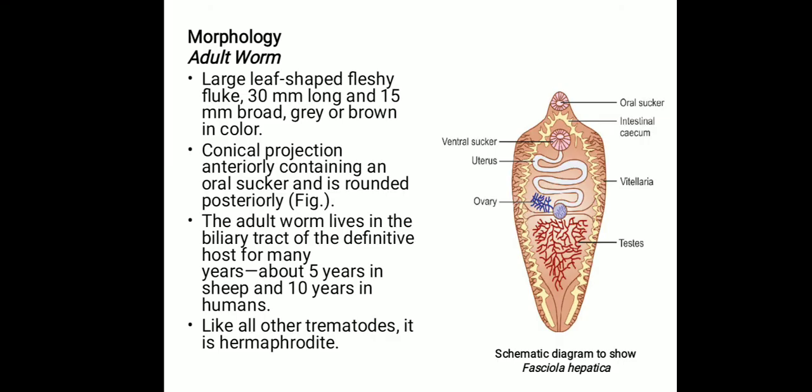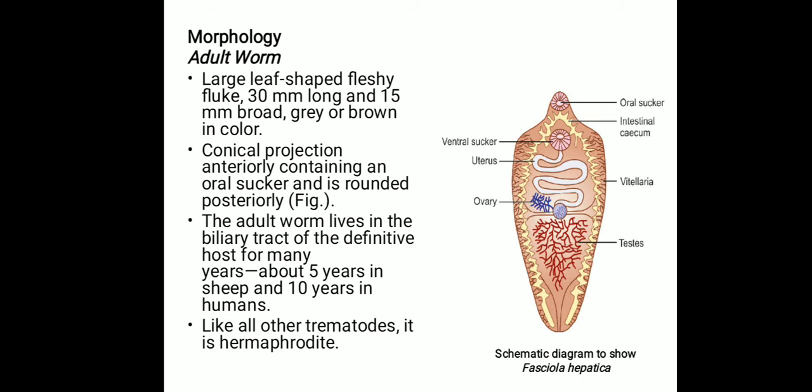The egg is the other morphological form. The eggs are large, oval, operculated, stained, and about 140 micrometers by 80 micrometers in size. They contain an immature larva known as the miracidium. These eggs do not float in a saturated salt solution when performing diagnosis.